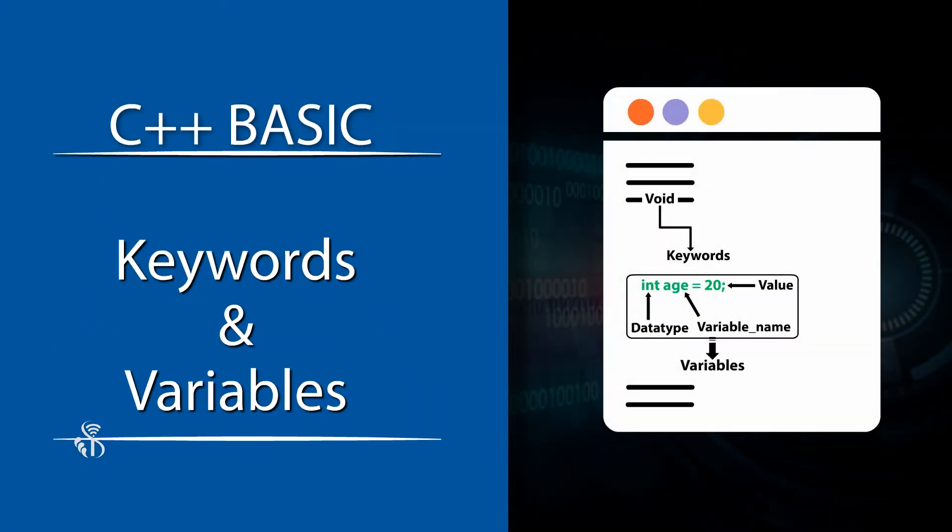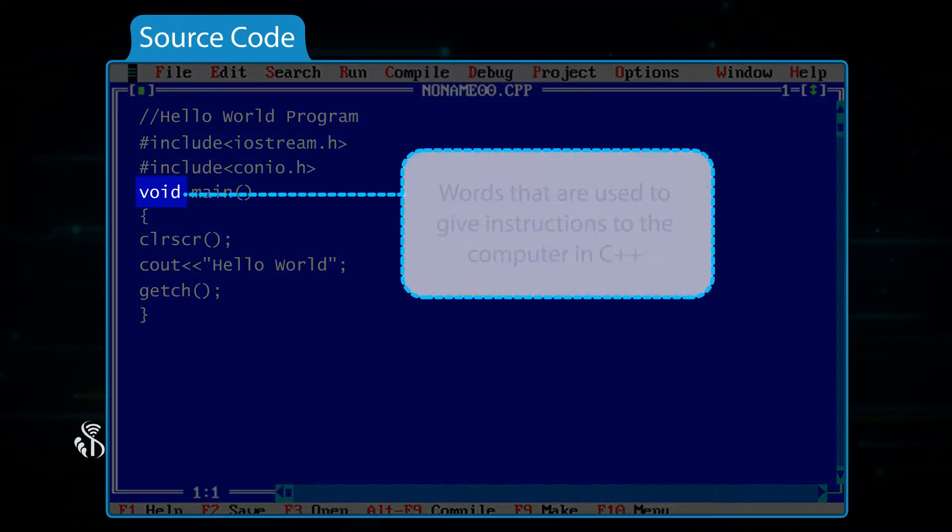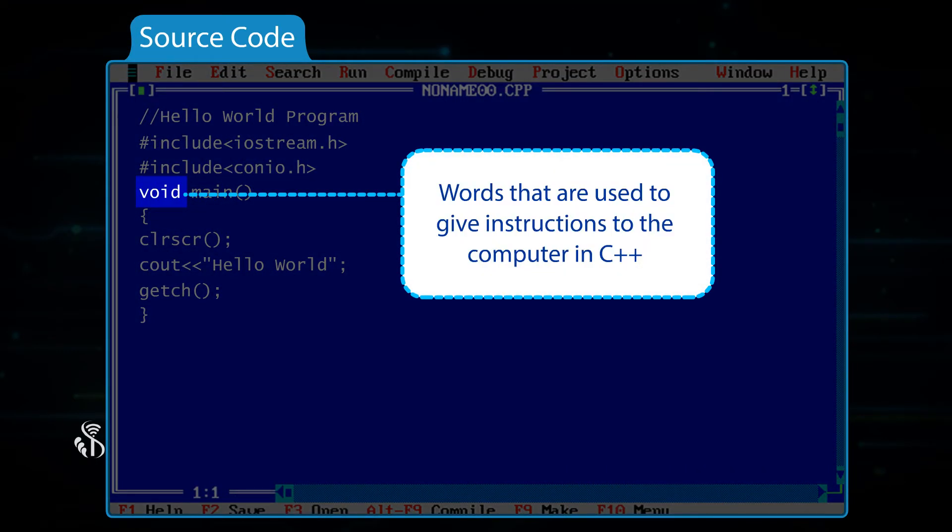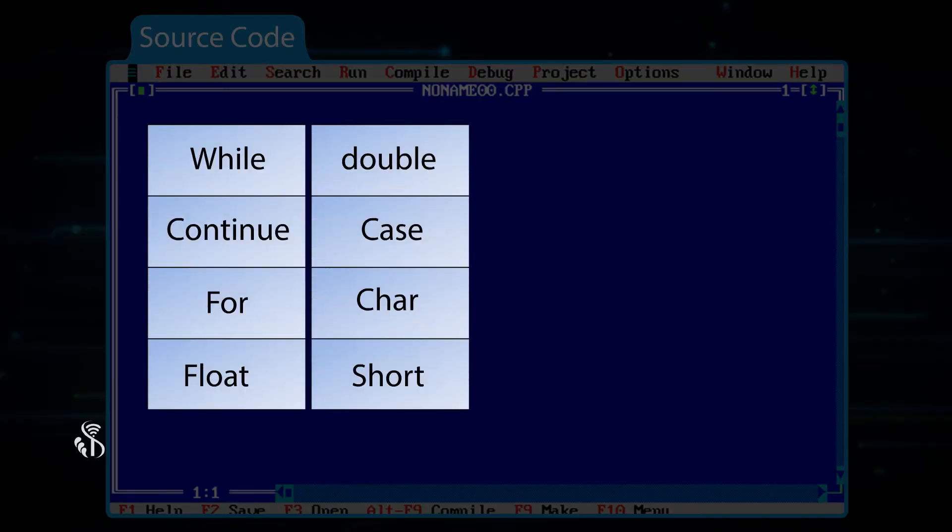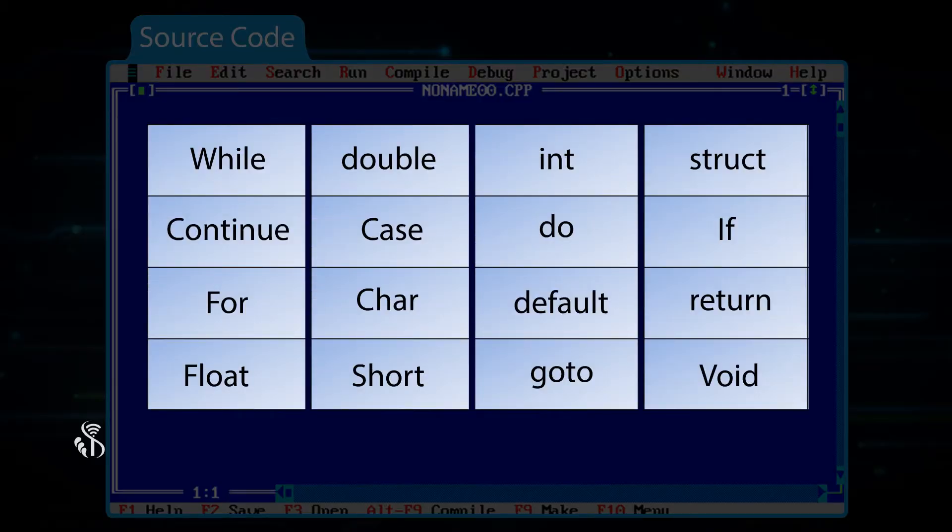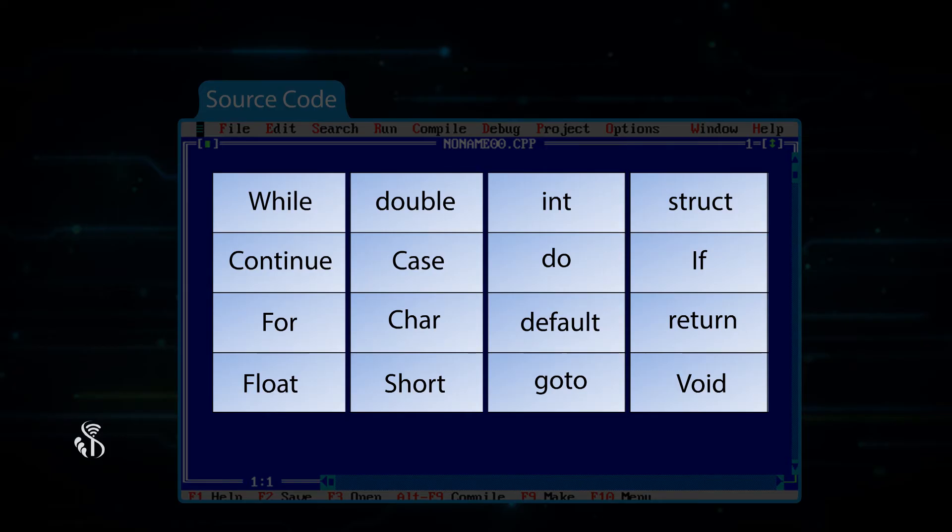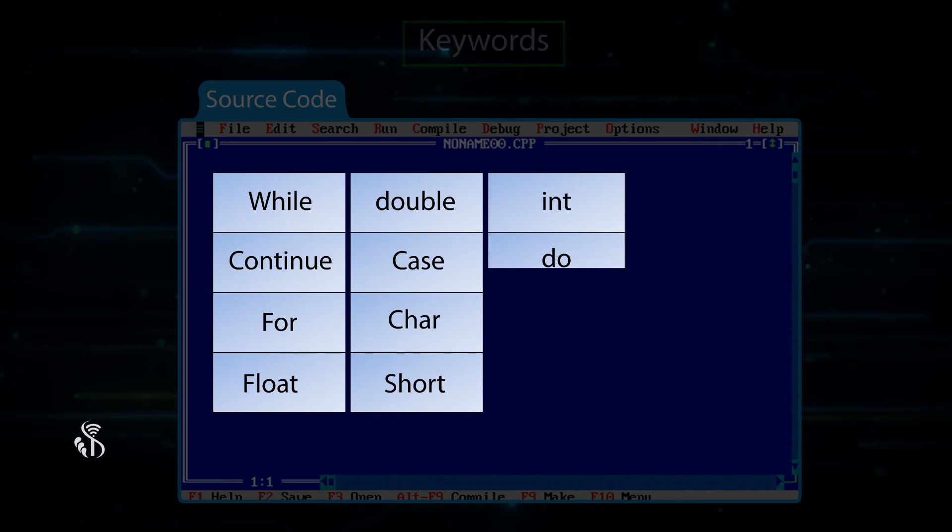Keywords and Variables. There are some words that are used to give instructions to the computer in C++. A few of the commonly used words are showing in the video. These are called keywords. We will see how these keywords are used later.